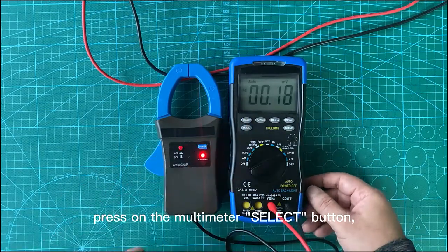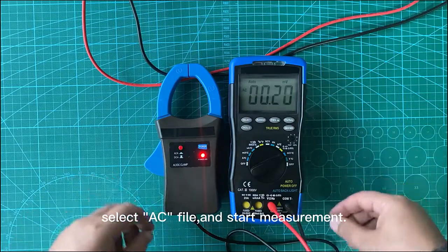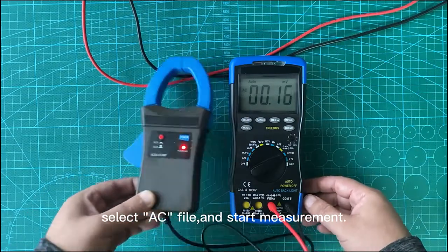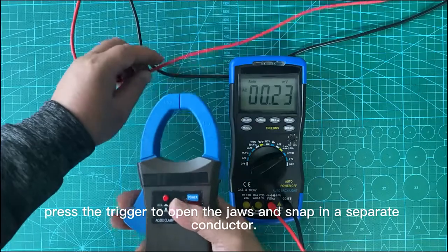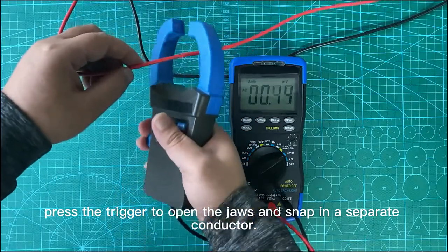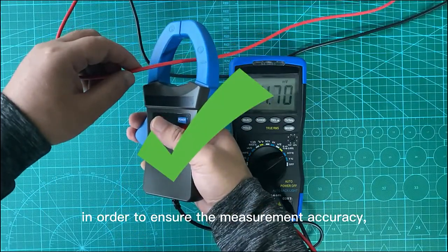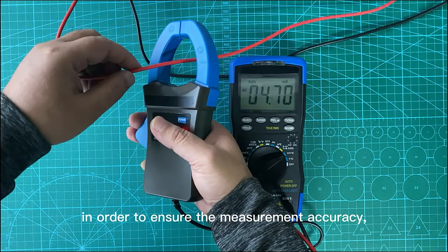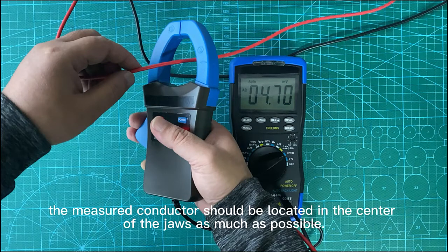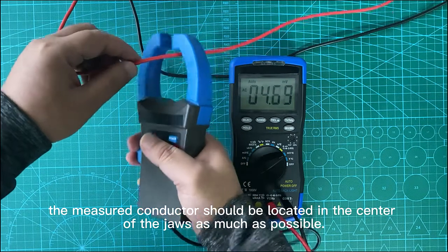Press the multimeter select button, select AC file, and start measurement. Press the trigger to open the jaws and snap in a separate conductor. To ensure measurement accuracy, the measured conductor should be located in the center of the jaws as much as possible.